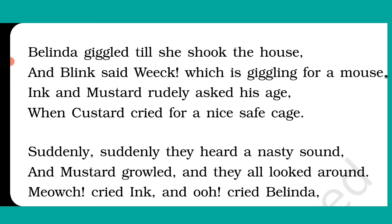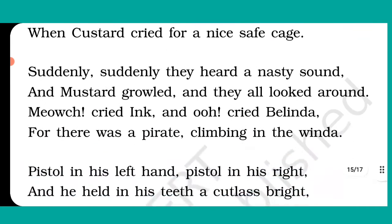With this stanza, the poet says that Valinda used to laugh so loudly that her voice echoed in the house. Blink the mouse used to laugh and make a sound of 'weak.' On the other hand, Ink and Mustard would tease the dragon by asking his age whenever he demanded a nice safe cage.